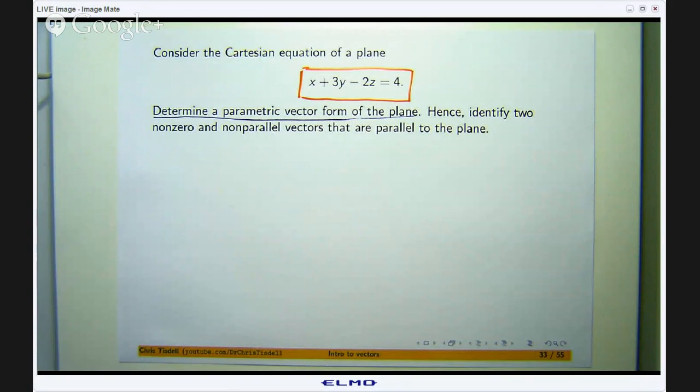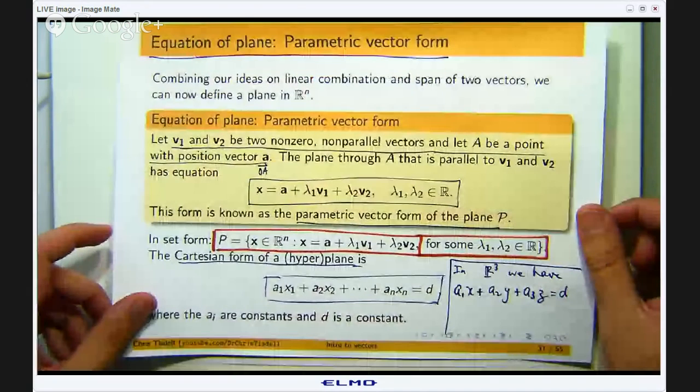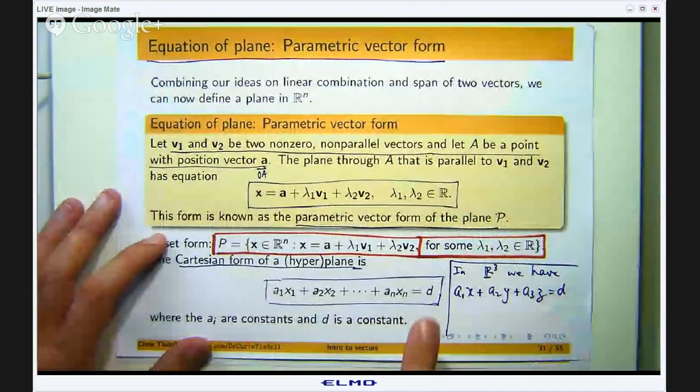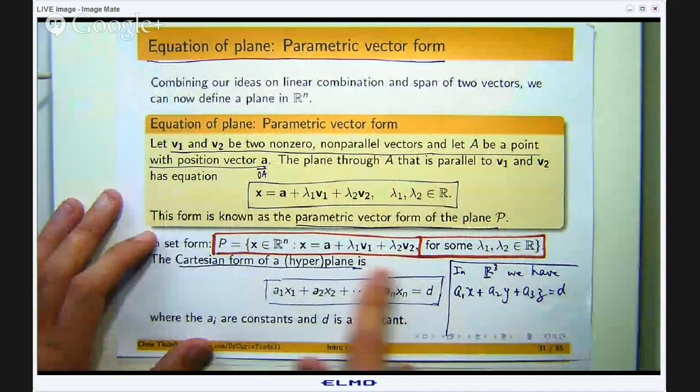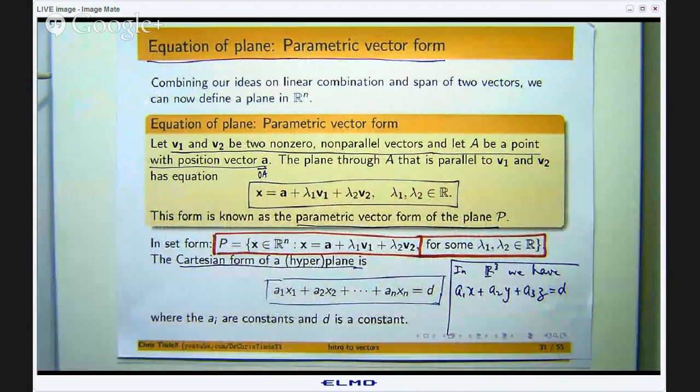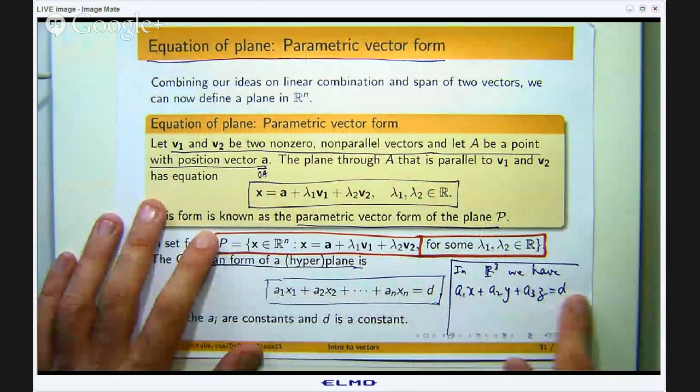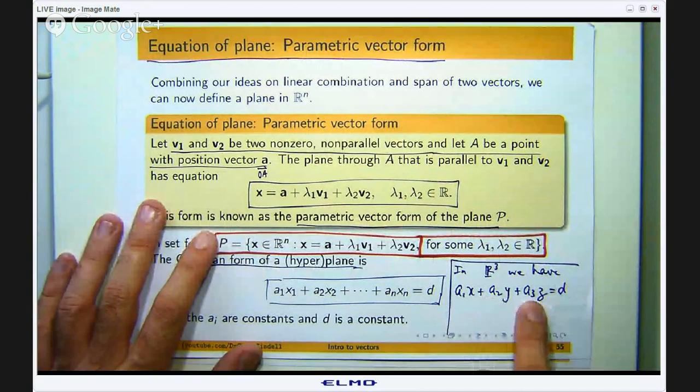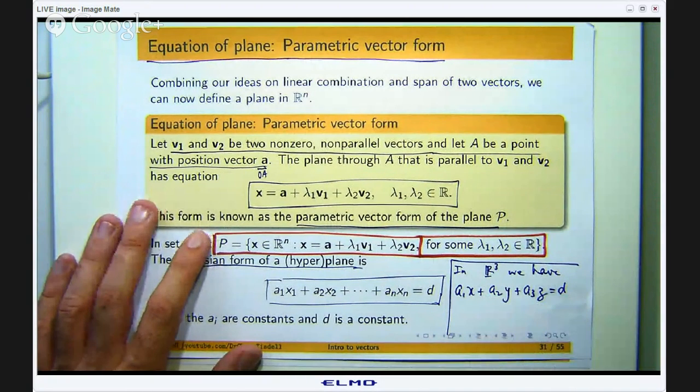Well in previous videos we talked about the equation of a plane. So down here is the Cartesian form of a plane in say n dimensions. Here we have got the Cartesian form in three dimensions where a1, a2, a3 and d are just numbers or constants.